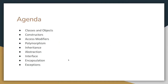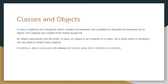In this video we are going to cover all these topics. The first one is related to class and objects in Java — everything depends on objects. A class is defined as a blueprint which consists of methods and variables that describes the behavior of an object, and objects are created from these blueprints as new instances. An object represents real-life entities like a car, a person, a student, an animal — we can call everything an object.